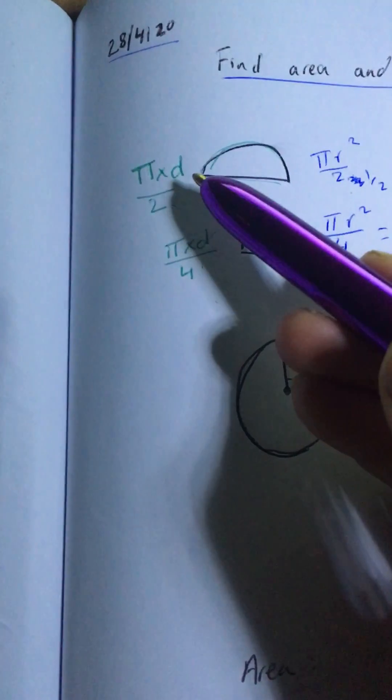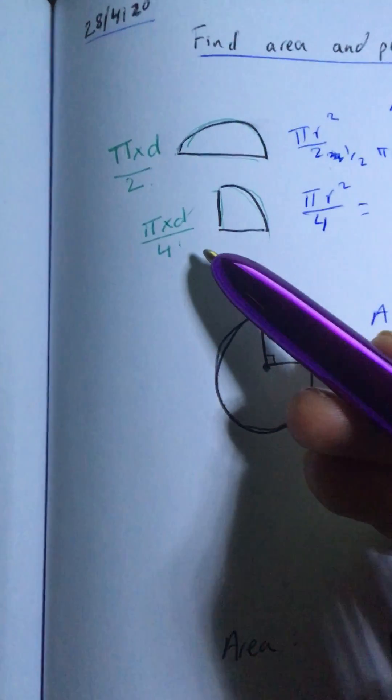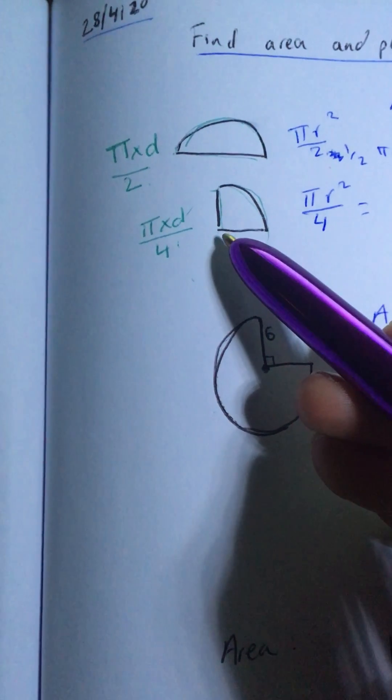Now, I divided by 2 here because I had half of a circle, and I divided by 4 here because I had a quarter of a circle.